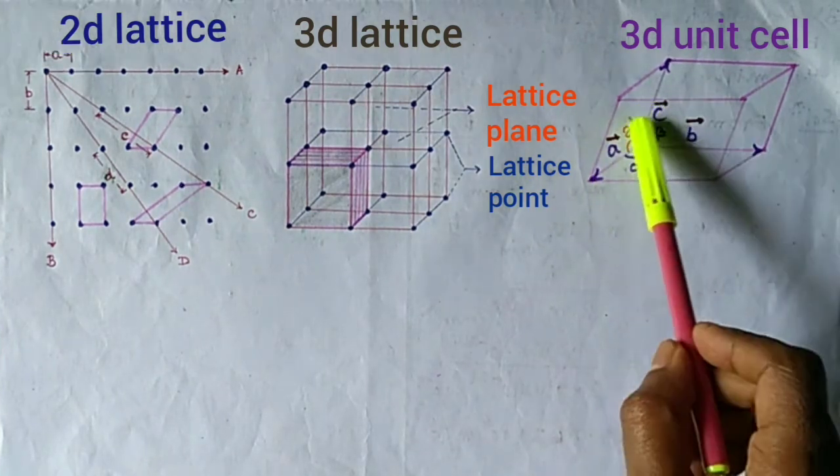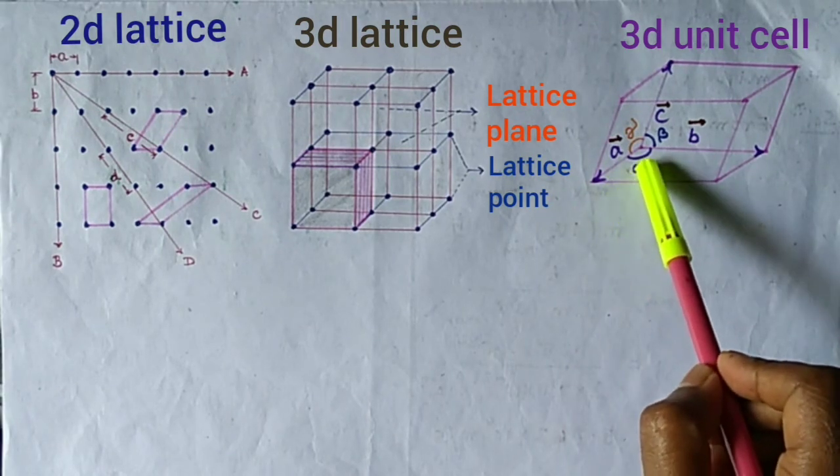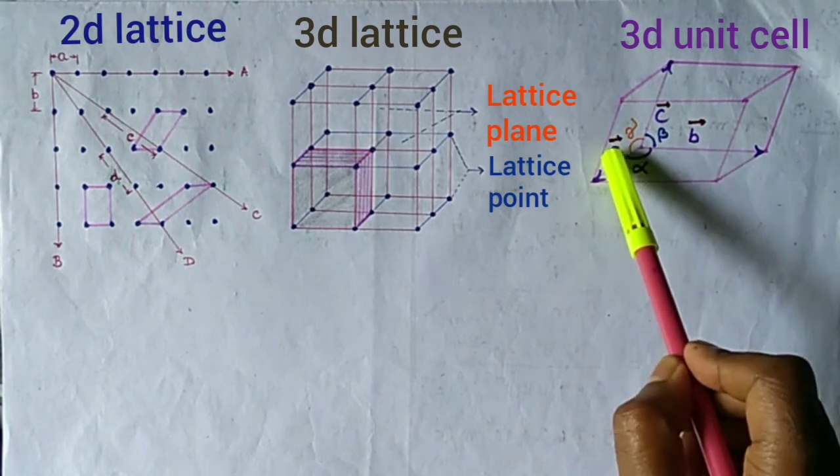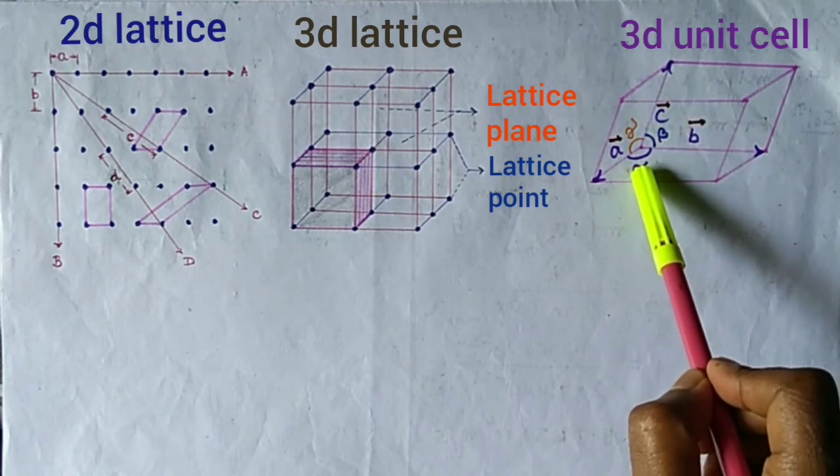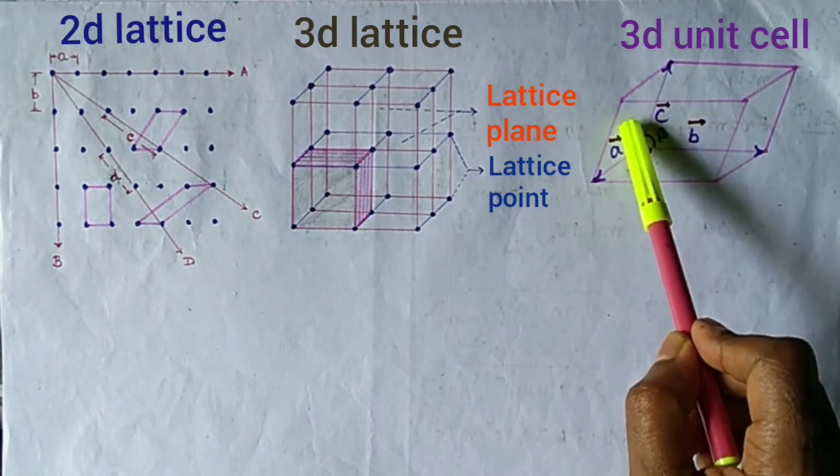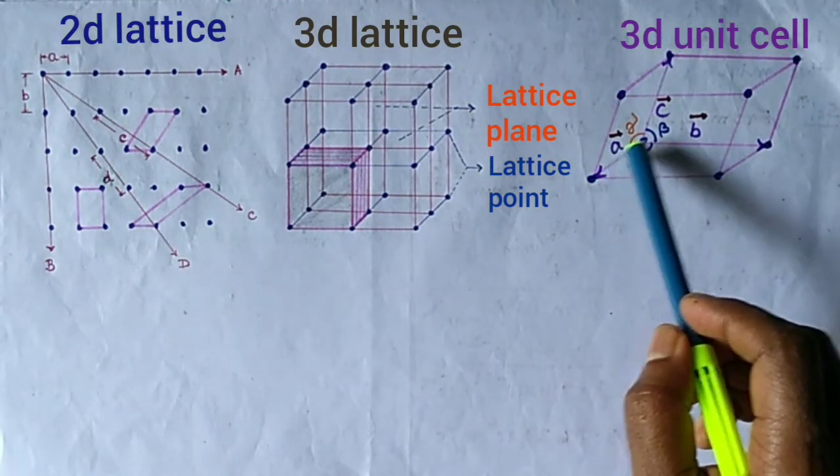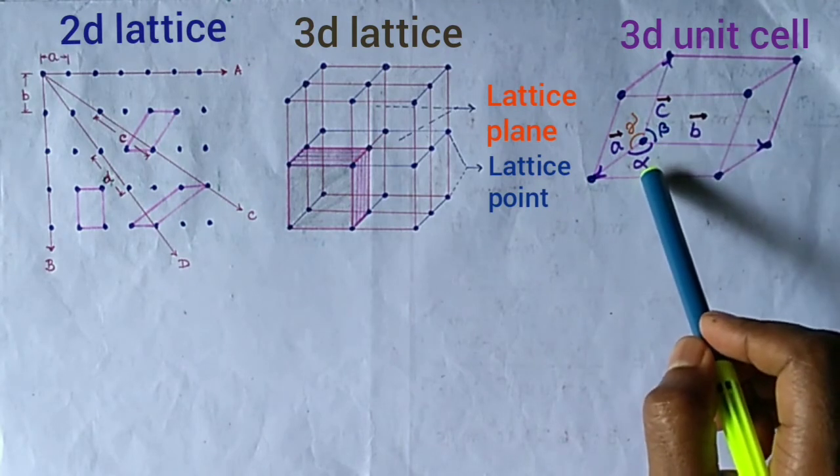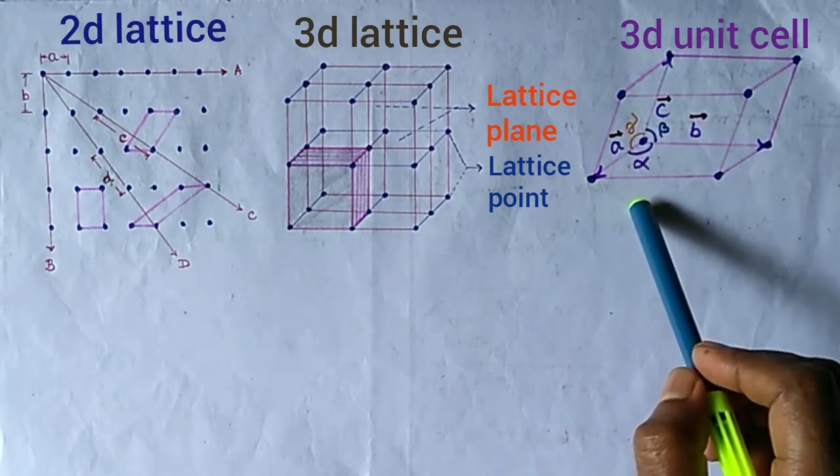The shape and size of the unit cell are determined by the length of its sides A, B, and C, and the angles alpha, beta, and gamma between them. The lattice translation vectors Vector A, Vector B, and Vector C, and the angles alpha, beta, and gamma are known as the lattice parameters.